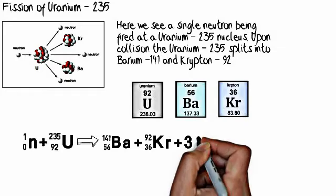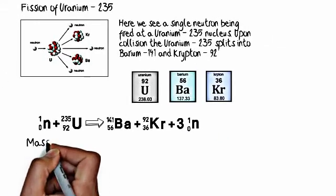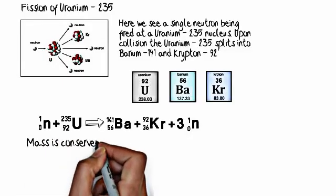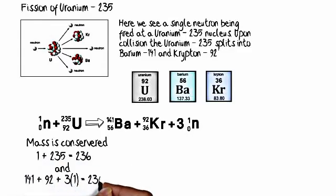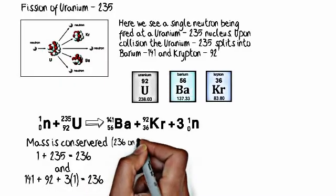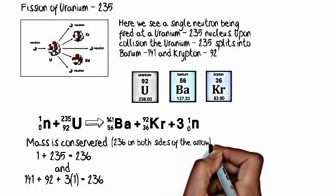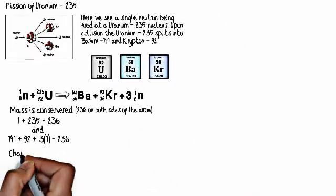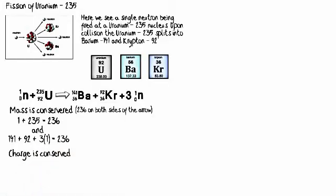When we write that out, what you see is that the mass is conserved. Because you take 1 plus 235, that will equal 236. Those are the mass numbers on the left side of the arrow. And 141 plus 92 plus 3 times 1, because there are 3 neutrons, gives us 236. So, the mass number is conserved, and the charge is conserved. We have 0 plus 92 equals 92, and 56 plus 36 plus 3 times 0 equals 92. We have 92 on both sides of the arrow. Charge is conserved.